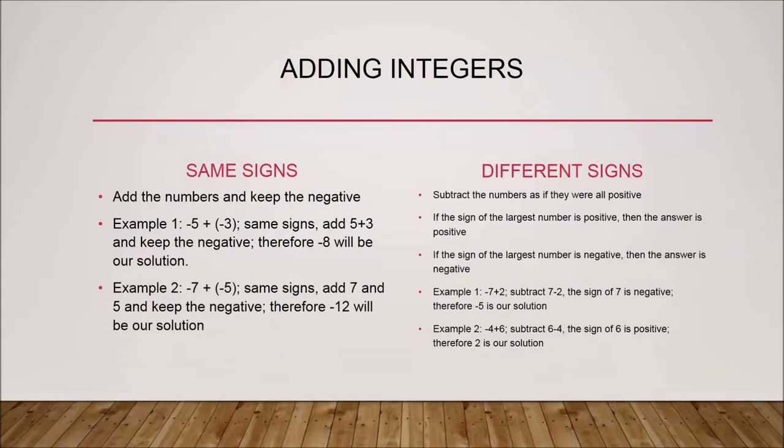In the case of same-sign numbers, all we have to do is add them as we would add two regular numbers, and just keep the negative sign. For example, we have minus five plus minus three. We can see that these two numbers have the same signs, so we add five and three, which equals eight, and put the negative sign before it — giving us negative eight as our final answer.